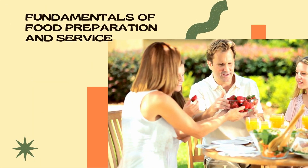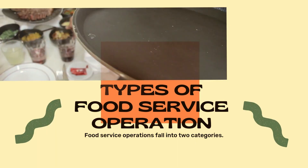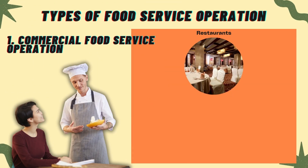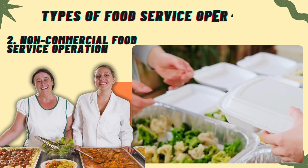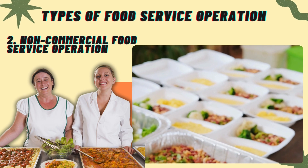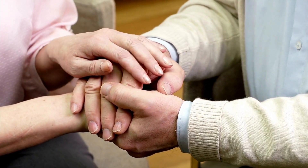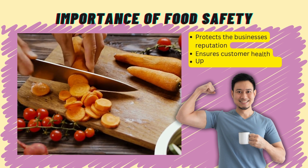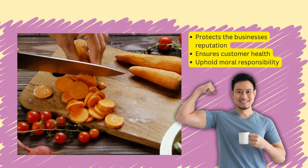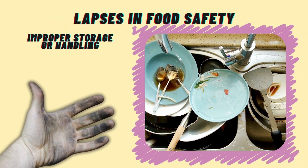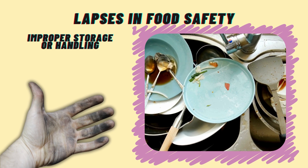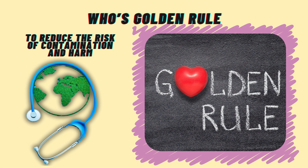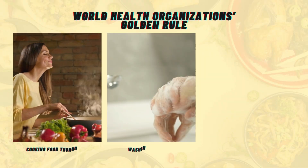Types of Food Service Operations: Food service operations fall into two categories. Commercial food service operations — businesses like restaurants, hotels, and fast food chains — focus on making a profit from selling food. Non-commercial food service operations, found in schools, government offices, or hospitals, serve food mainly to support employees or residents, often without aiming to make a profit. Food safety protects a business's reputation, ensures customer health, and upholds moral responsibility. Lapses in food safety, such as improper storage or handling, can lead to contamination and harm. Common errors include storing food at unsafe temperatures, undercooking, and poor personal hygiene among food handlers. To reduce these risks, the WHO's 10 Golden Rules offer helpful advice, such as cooking food thoroughly, washing hands often, and keeping raw and cooked food separate.